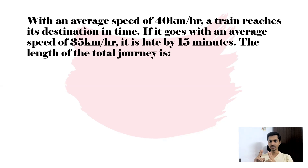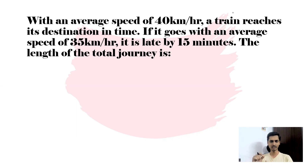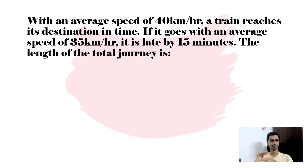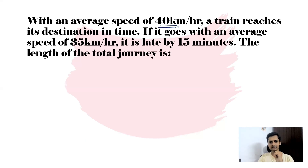We can solve this question in two ways. The first is the formulaic way — using a formula. The second is a shortcut, which I will teach later. If you want to try the problem yourself, pause the video and put your answer in the comments. Now, what is given? The average speed of the train is 40 kilometers per hour, and it reaches the destination in time. We need to find the distance.